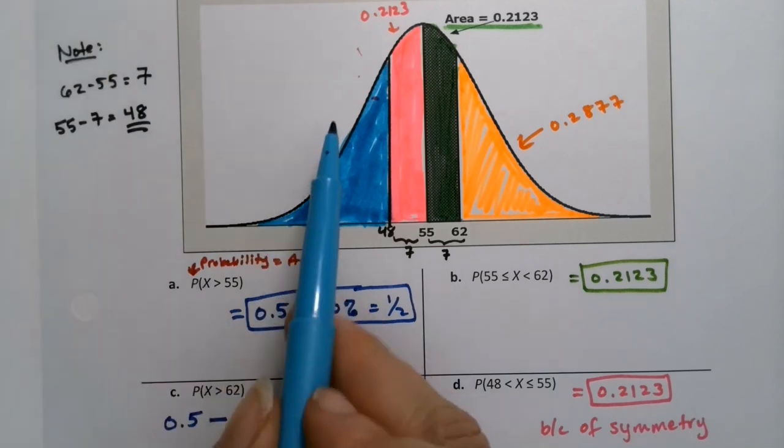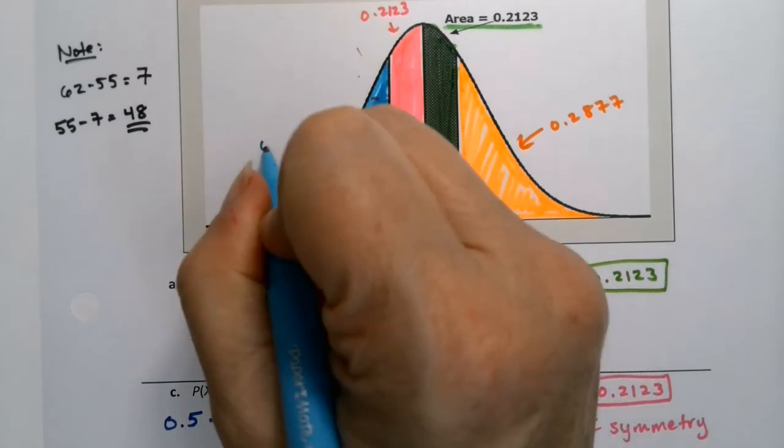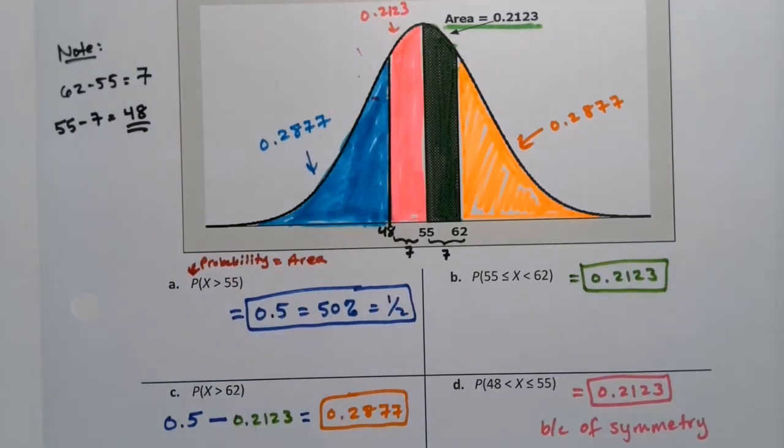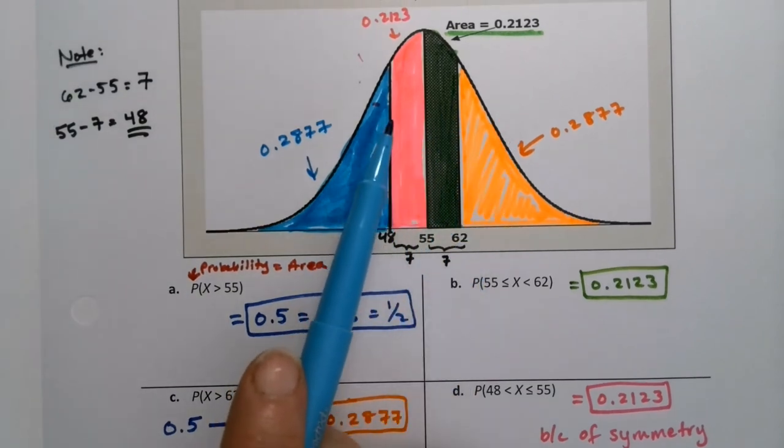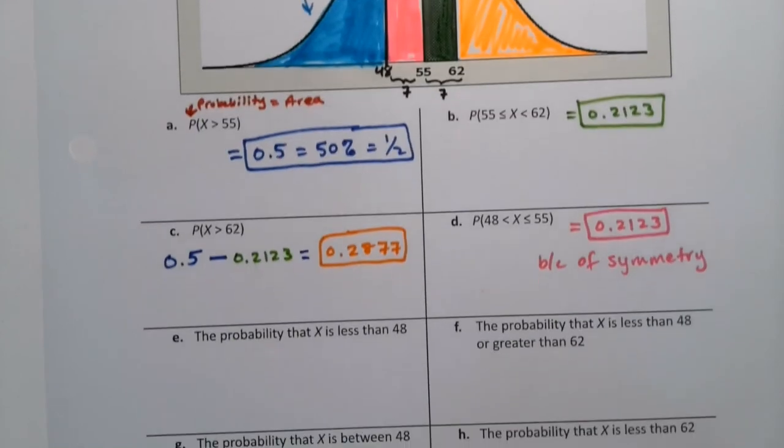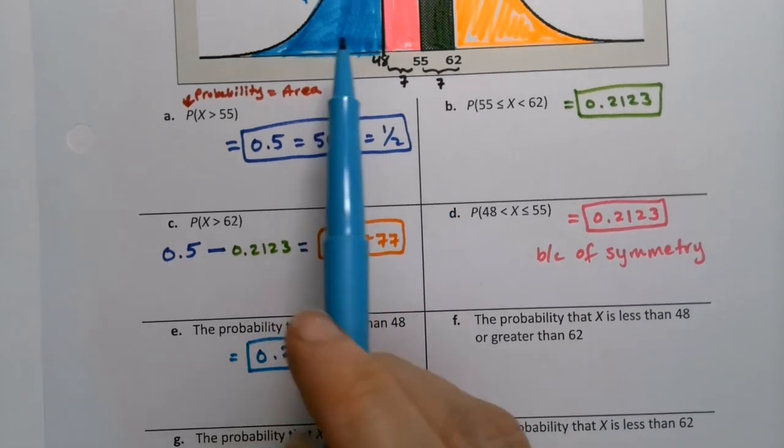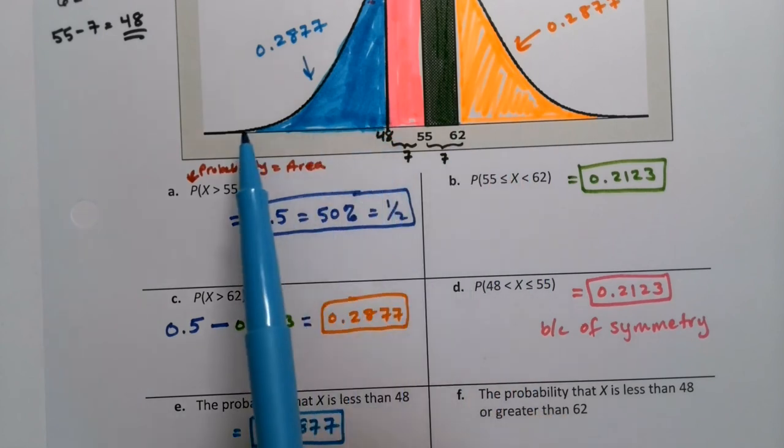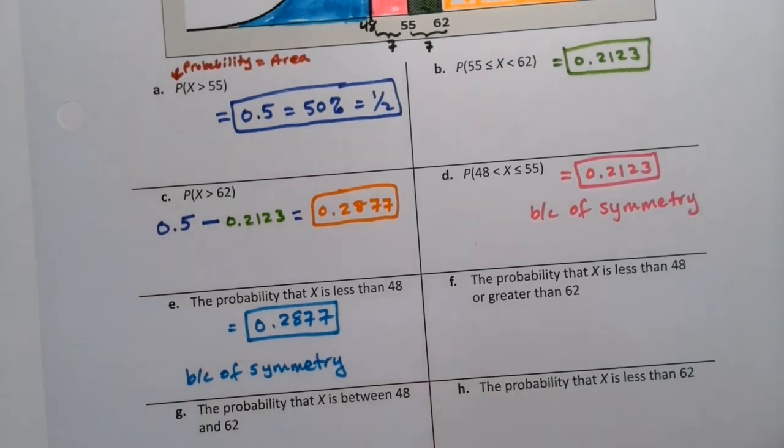Now if you're thinking, what about that other zone, the blue zone? Isn't that also 0.2877? Oh, yes, it is. Because of symmetry, this has to be the same. So once you find these two, then you can also find their companions. Which is convenient for us because the probability that X is less than 48 is 0.2877. Again, by symmetry, it should be the same value as the orange zone over here.